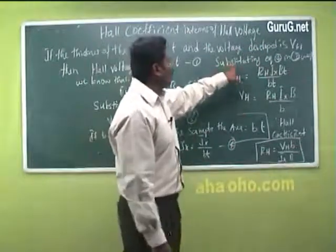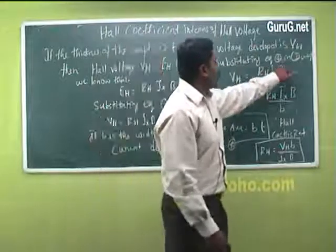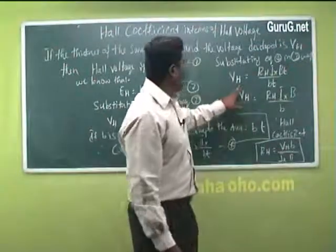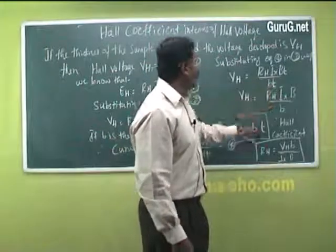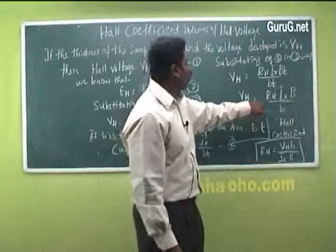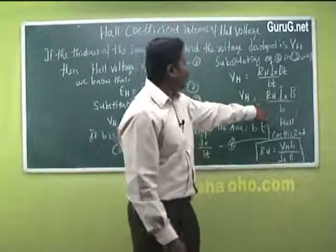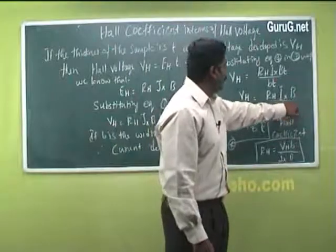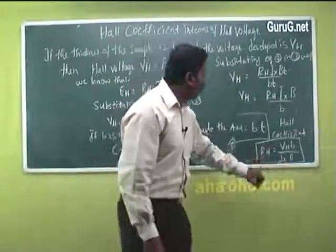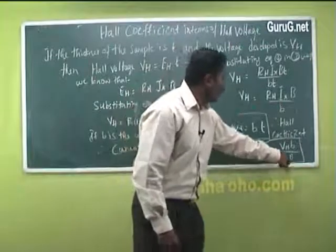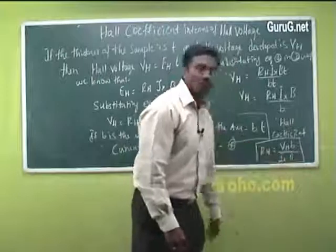Substituting equation 4 in equation 3, we get VH equals RH·IX·B·t / (b·t), where t cancels. Therefore VH equals RH·IX·B / b, and so the hall coefficient RH equals VH·b / (IX·B).